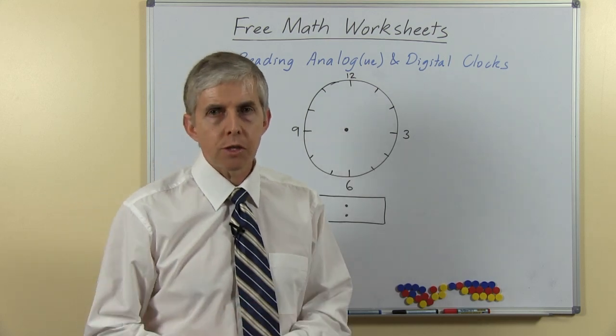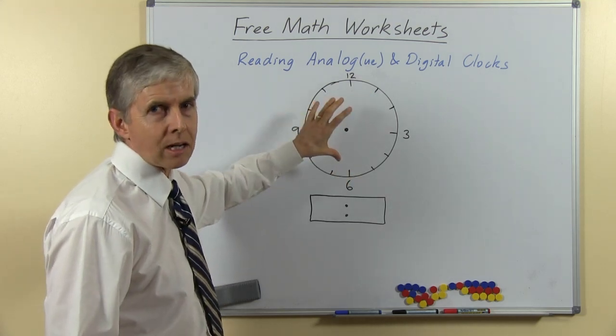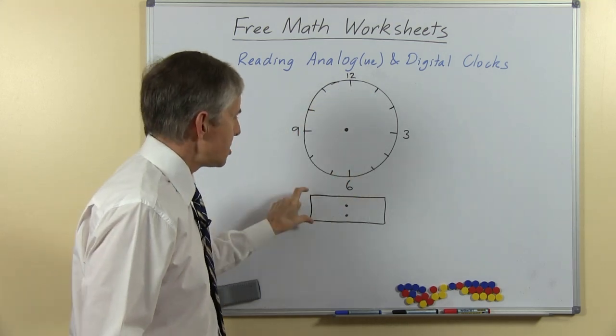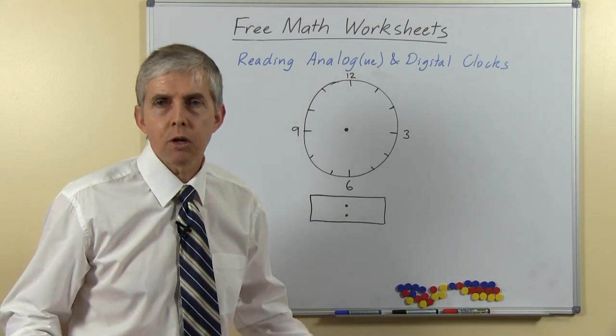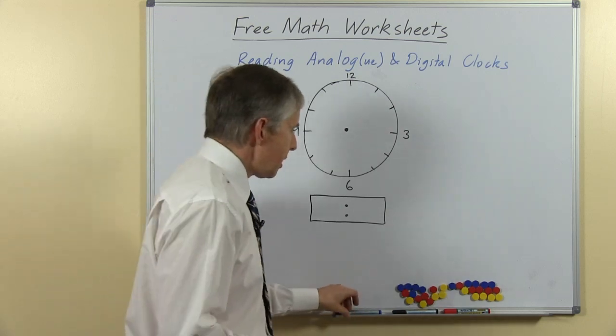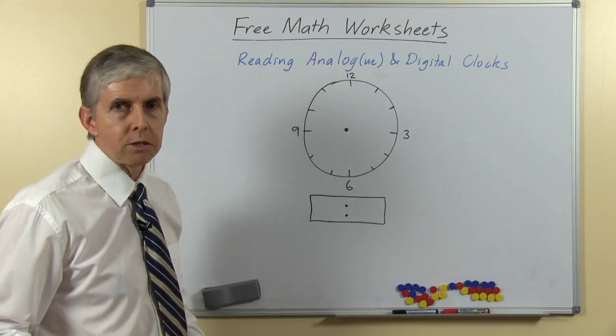We have two different sorts of clocks. This one is called an analog clock, and this is a picture of a digital clock. You may have both sorts of clocks in your home or just one, but it's important that you learn to read the time on both clocks.